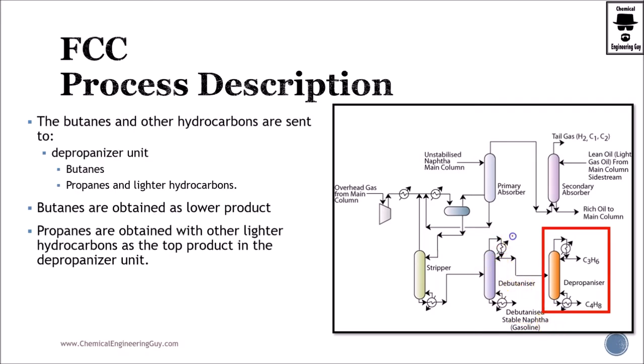And now butanes go here with propanes. And now the debutanizer separates propane versus butane. This can be sent to the liquefied petroleum gases, or C4 can be sent for the isomerization and convert further isobutane, which later can be used in the alkylation unit and so on.